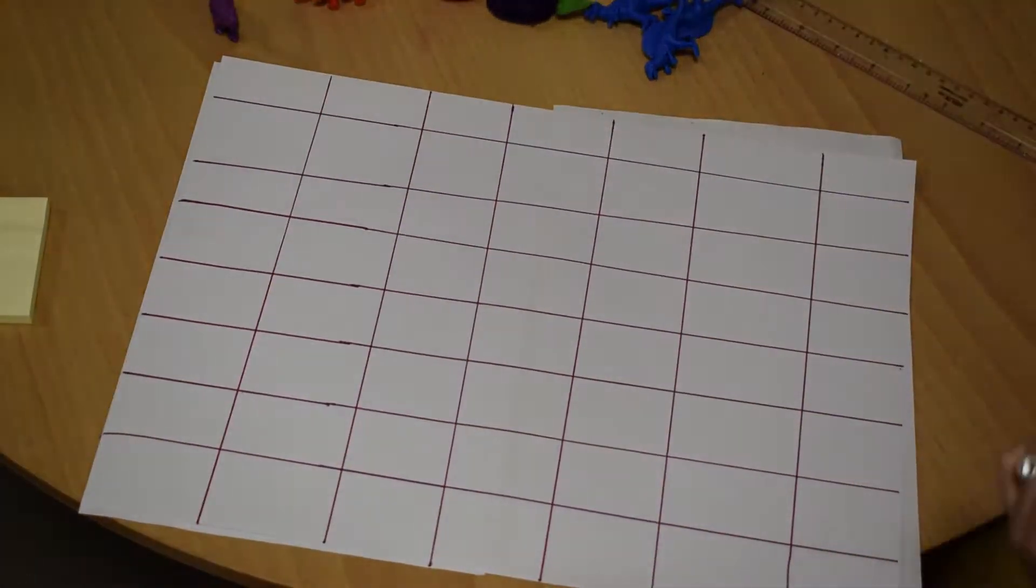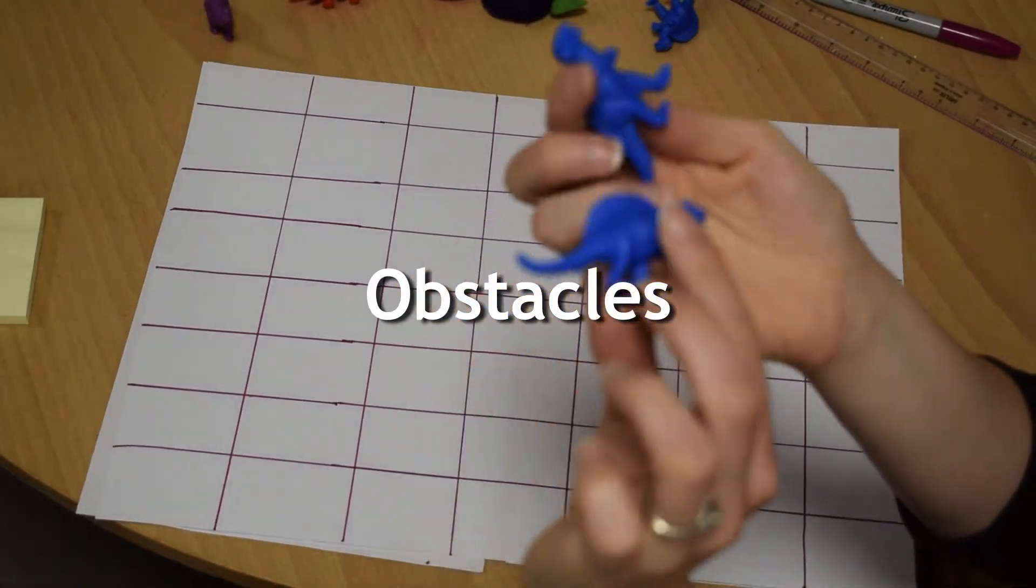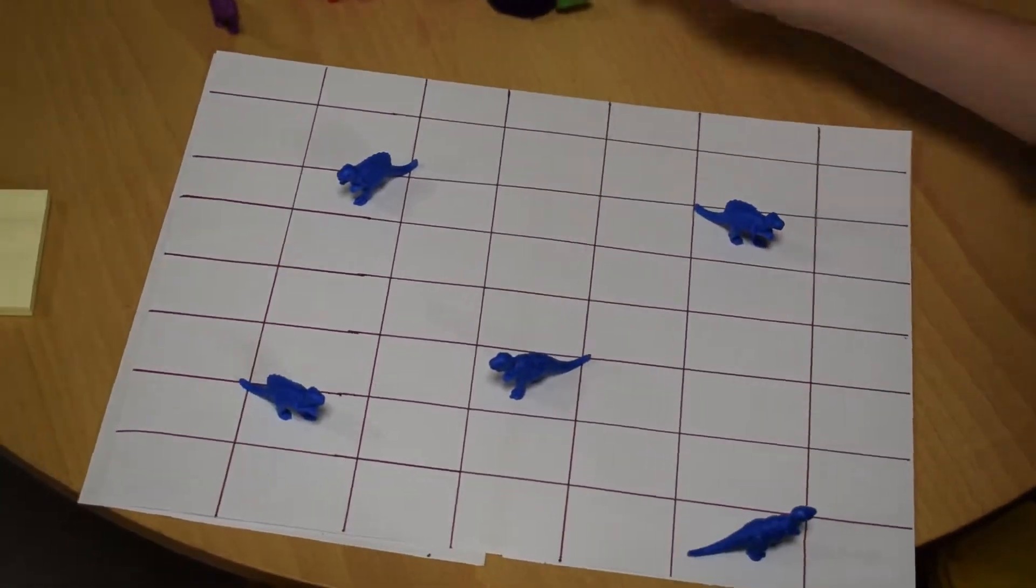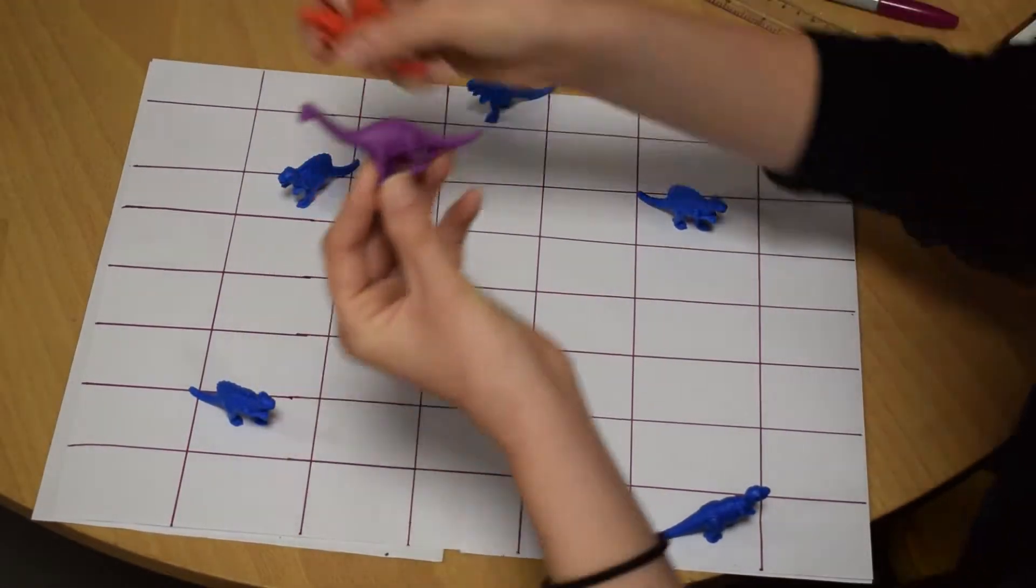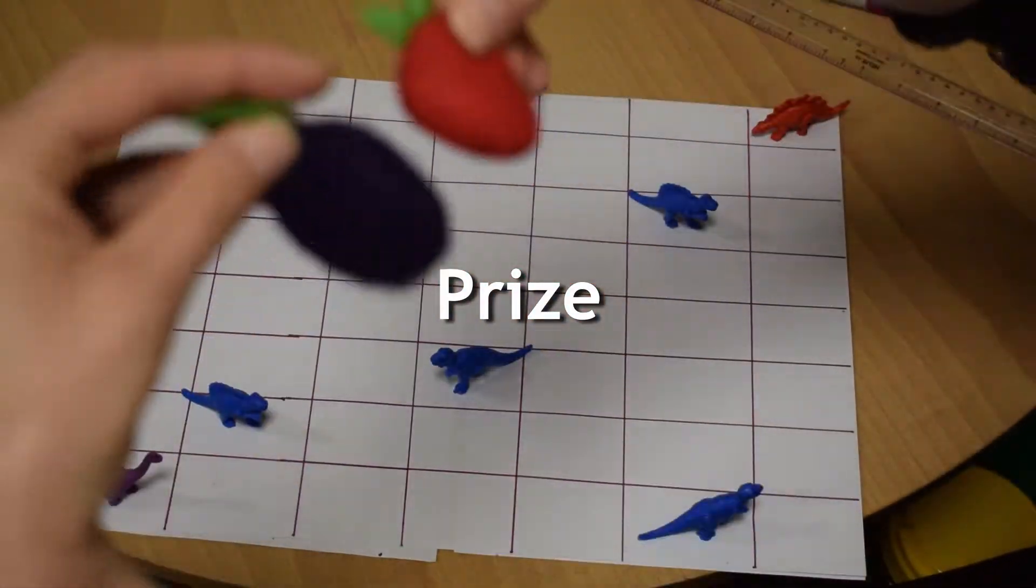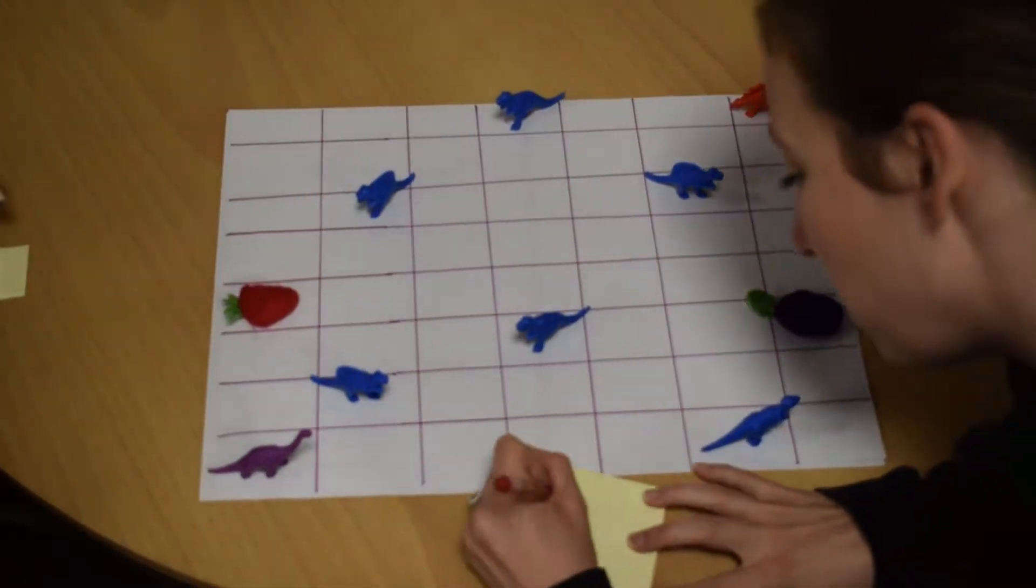Our blue dinosaurs are going to be our obstacles because they're carnivores. We have two other dinosaurs that are herbivores that are going to go after our fruits. But you can use any toys that you have. And in order to get our dinosaurs to their fruits, we have to write some code.